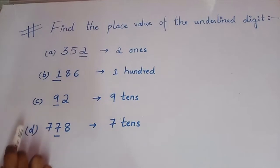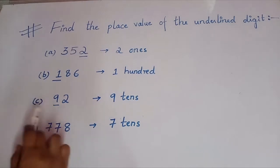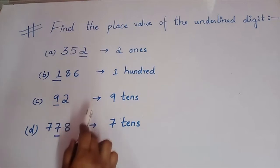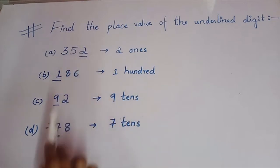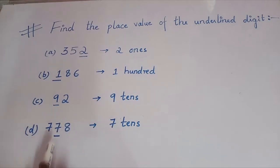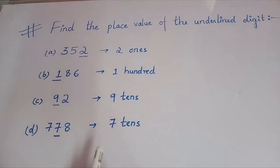Now the third example: 92. It is a 2-digit number. The digit 9 is underlined, so the place value of 9 is 9 tens. Now the last one: 778. The digit 7 is underlined — which 7? The tens digit 7. So the place value of that 7 is 7 tens. I think it is clear to you all.